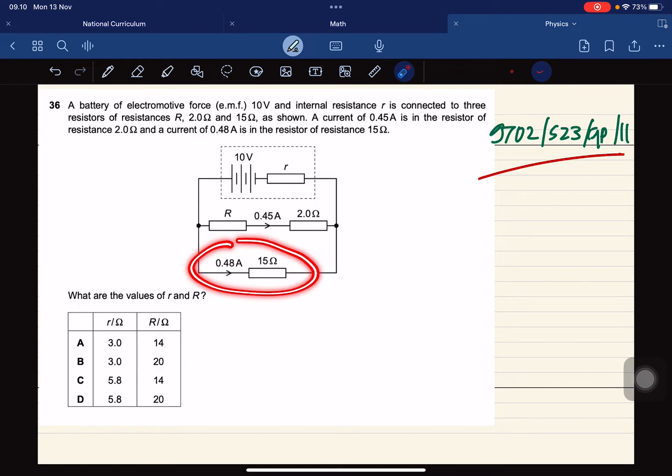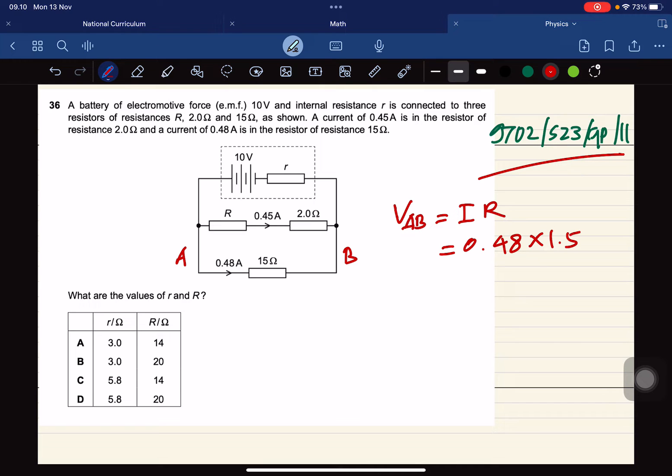We check from this, we have 0.48 amperes and resistance 15.0 ohm. So from this we can find, we can get V. Let's say this is point A and B. So V_AB equals to IR, I is 0.48 and then R is 15. We check this is about 7.2 volts.